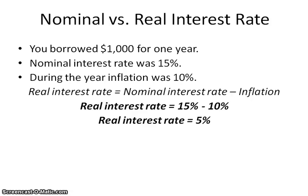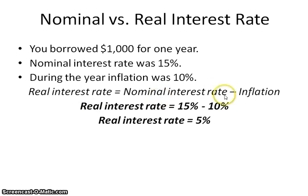Another thing to think about is the difference between nominal and real interest rate. An interest rate is on a loan — you have to pay interest and give extra money for somebody to loan money to you in advance. The nominal interest rate is what the banks charge you, and the real interest rate is that adjusted for inflation. You find the real interest rate by subtracting the inflation rate from the nominal interest rate. For example, a nominal rate of 15% minus an inflation rate of 10% gives you a real interest rate of 5%.